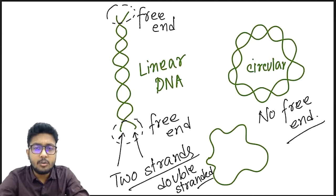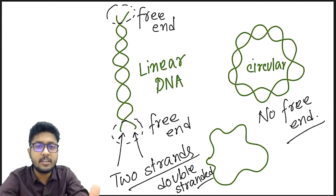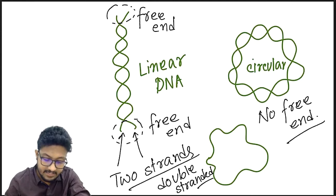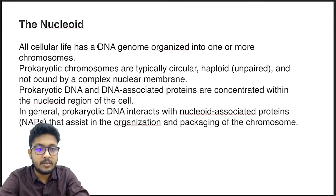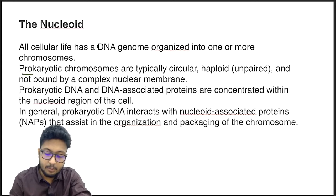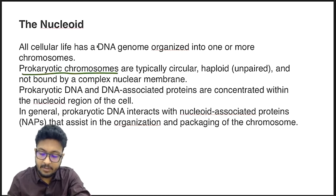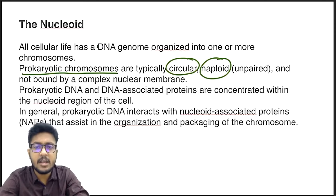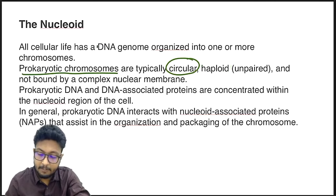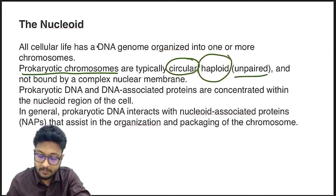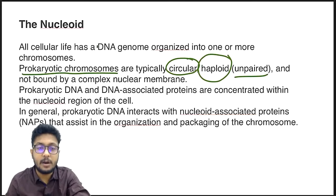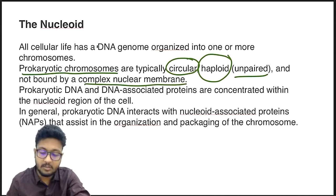The nucleoid is also called a genophore. The nucleoid represents a prokaryotic chromosome, which is circular in nature and haploid — meaning unpaired chromosomes. It is not bound by a nuclear membrane, and this is a defining property of the nucleoid or nuclear region of prokaryotic cells.